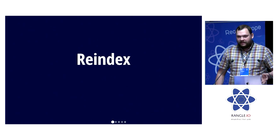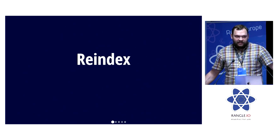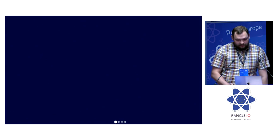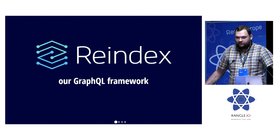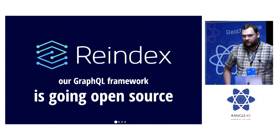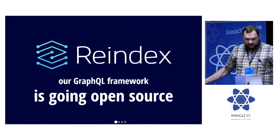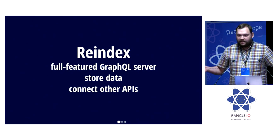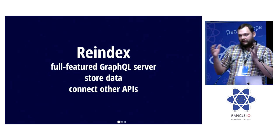We actually do this at re-index. We run re-index locally with a schema — we just have declarative types, we generate the API, and we have the storage. We have a framework behind the scenes that we built to power re-index, and we are going to open source it so everyone can build higher-level servers with GraphQL. Re-index is already a full-featured GraphQL server: we store data, and you'll be able to connect to other APIs and build GraphQL servers.